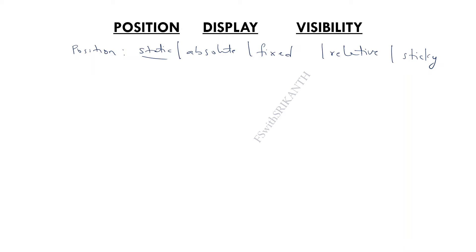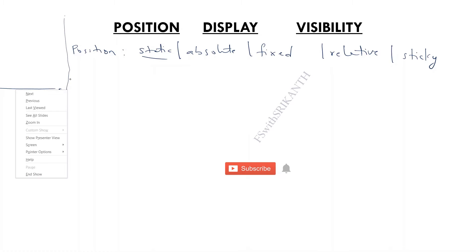What is absolute? Absolute displays the element based on x and y coordinates, and elements can be scrolled. You can give a left value to provide some space, and also a top value, and those will be applied.